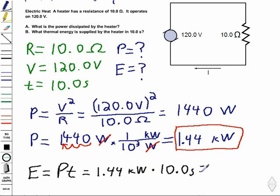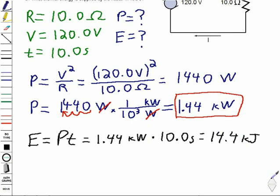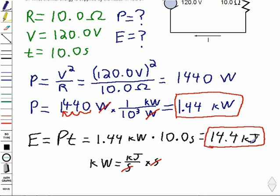And that's going to equal 14.4 kilojoules. So if we look at this for a second, a kilowatt is really a kilojoule per second. And if I'm going to then multiply that by seconds, seconds cancel out, and I'm left with 14.4 kilojoules.